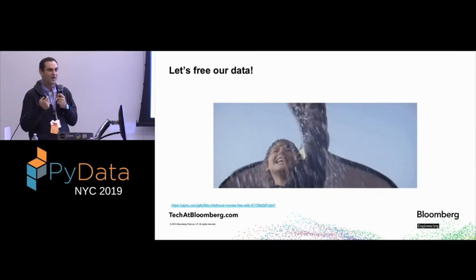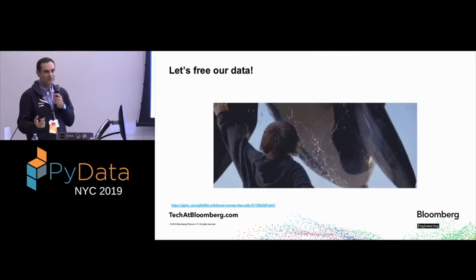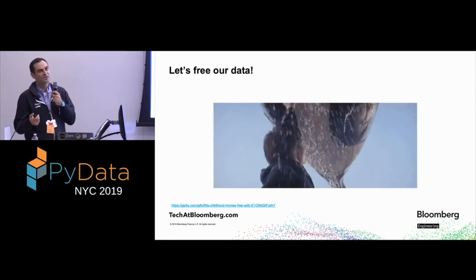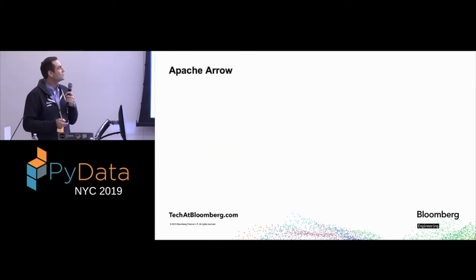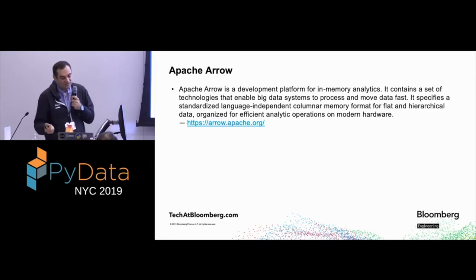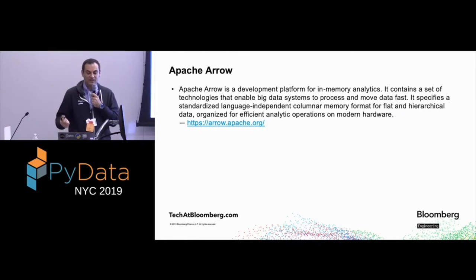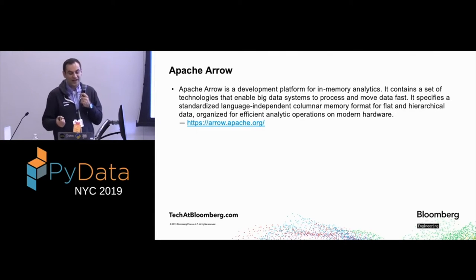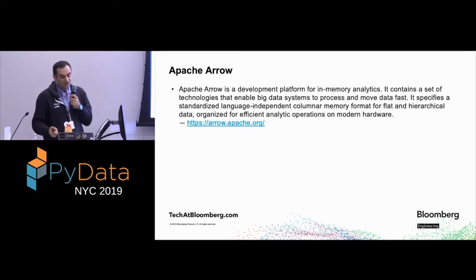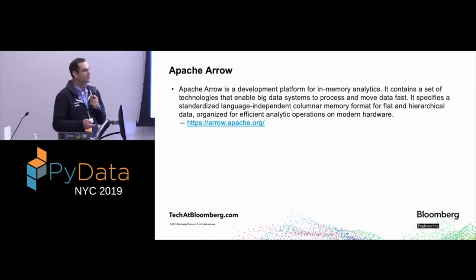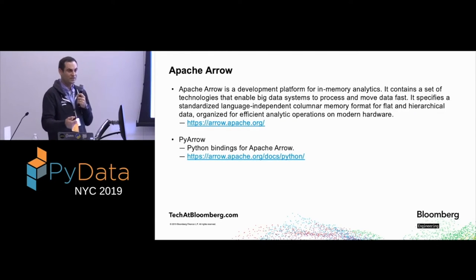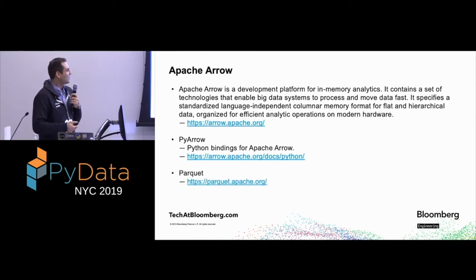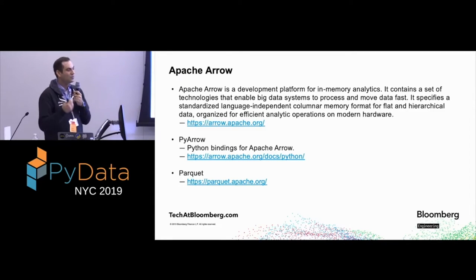Let me show you how to free your data — how to read any old data from whatever format you have, in the fastest way possible and have Pandas be able to read it. I'll show you how to use Apache Arrow. Apache Arrow is a development platform for in-memory analytics containing technologies that enable big data systems to process and move data fast. It specifies a standardized, language-independent columnar memory format for flat and hierarchical data, organized for efficient analytics on modern hardware. PyArrow are the Python bindings for Apache Arrow, and Parquet is a data format closely tied to Apache Arrow.